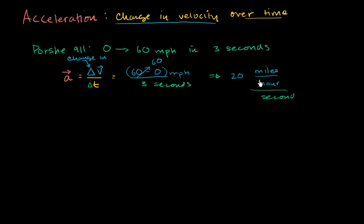This is saying that every second, this Porsche 911 can increase its velocity by 20 miles per hour. So its acceleration is 20 miles per hour per second. And actually, we should include the direction, because we're talking about vector quantities.